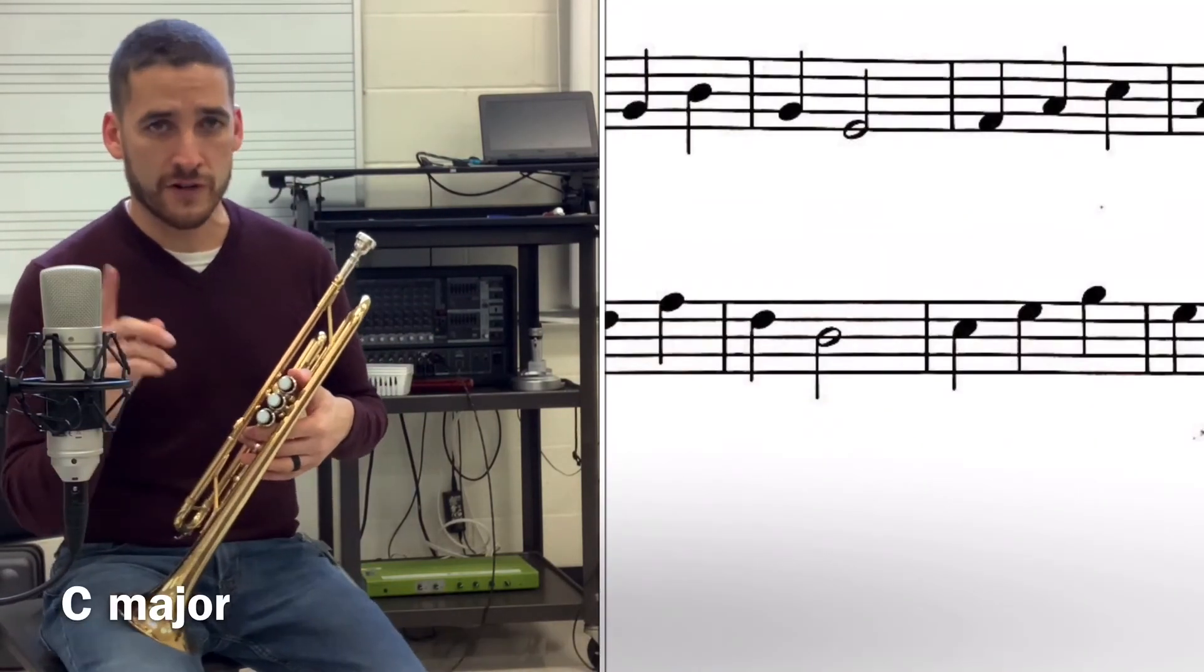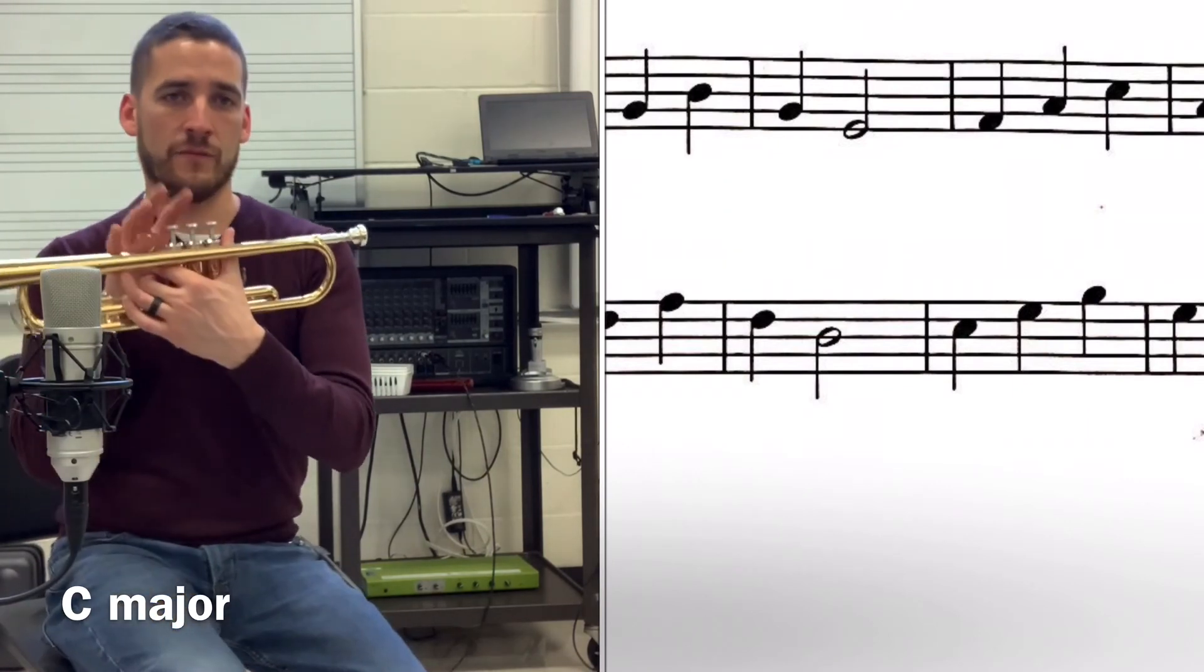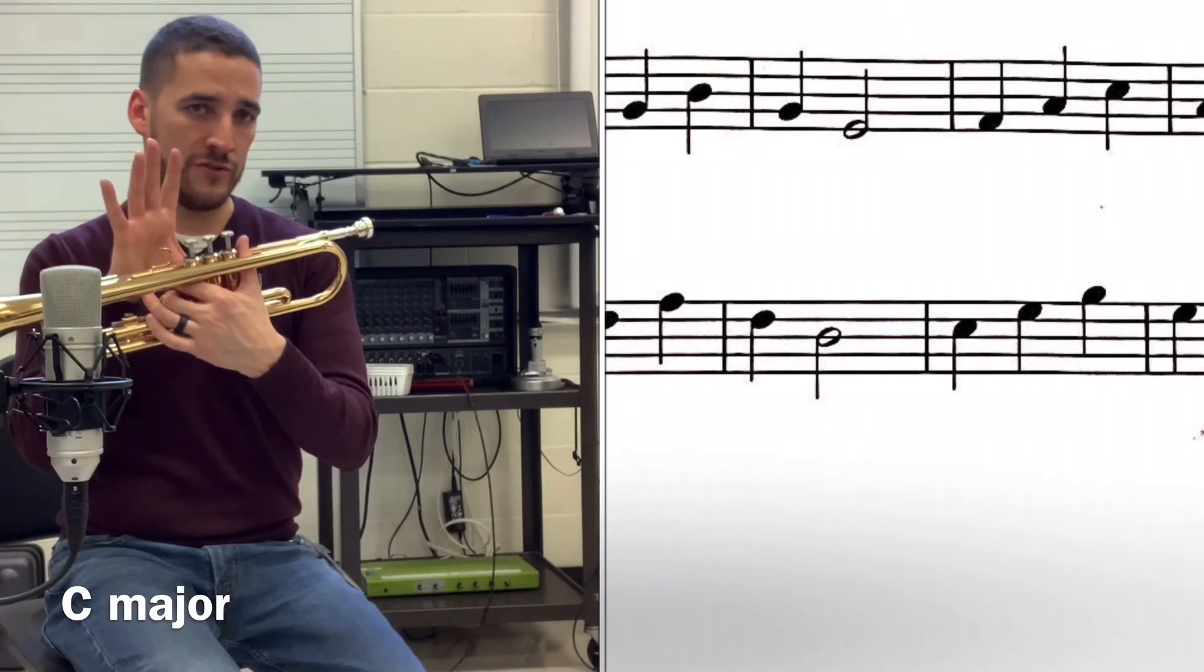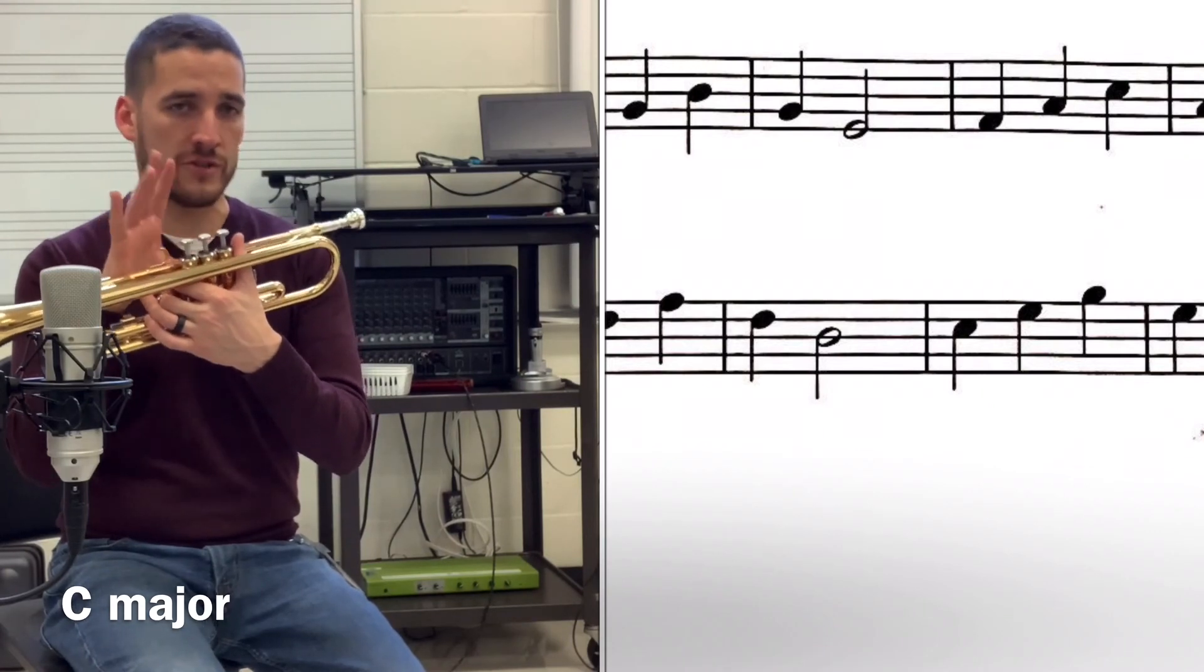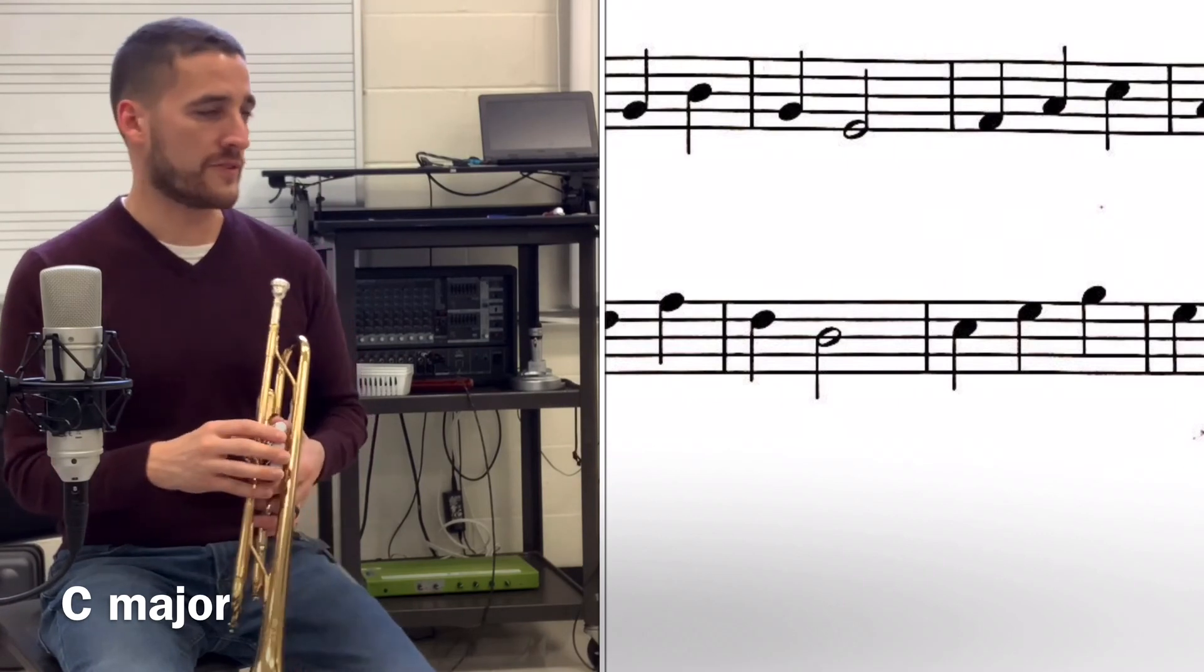And then finally we get back to the first or eighth, our octave. This is C, C major arpeggio, and we have high C, then up to E which is still open, and then G which is still open. So we don't have to deal with any valves, it's all lip work up here. So let's see if I can pull it off.